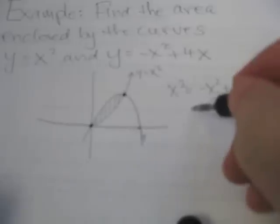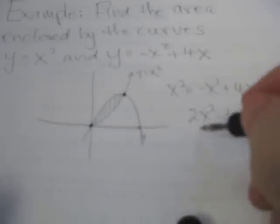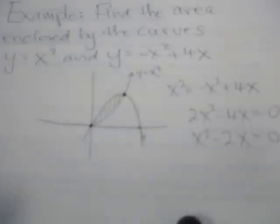And when we solve this, we're going to get 2x squared minus 4x equals 0, divide by 2, give me x squared minus 2x equals 0. That means that I have x times x minus 2 equals 0, so x is equal to 0 and 2.